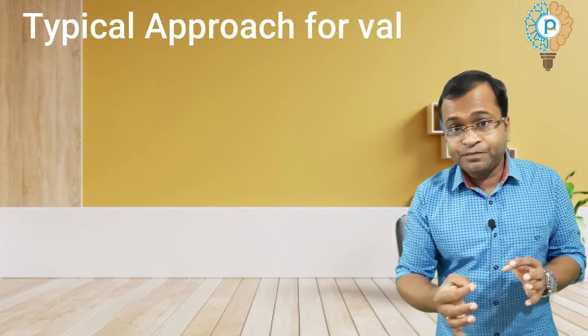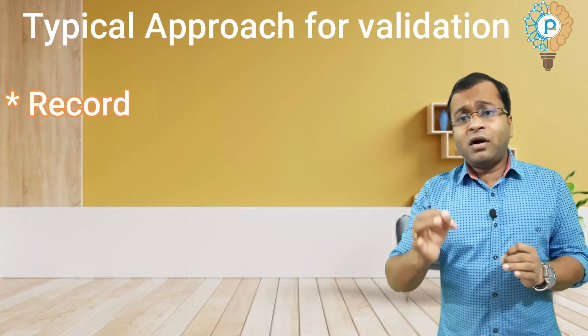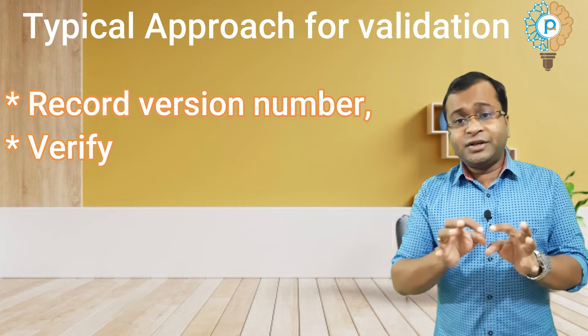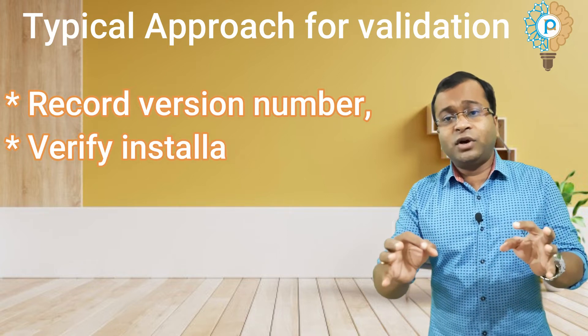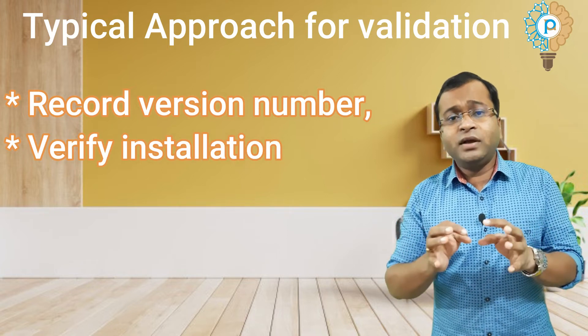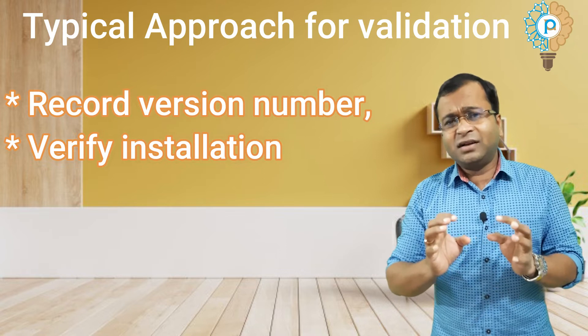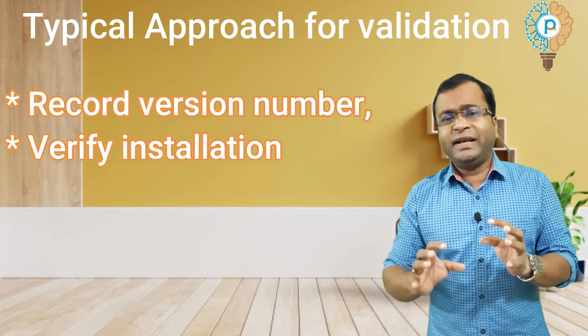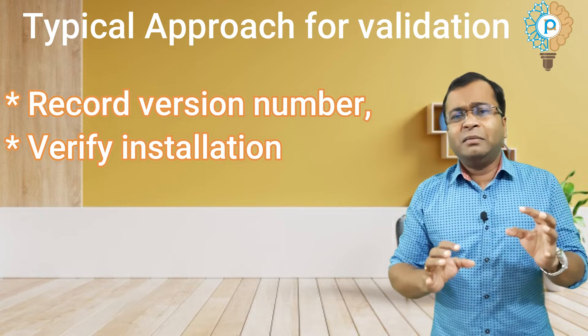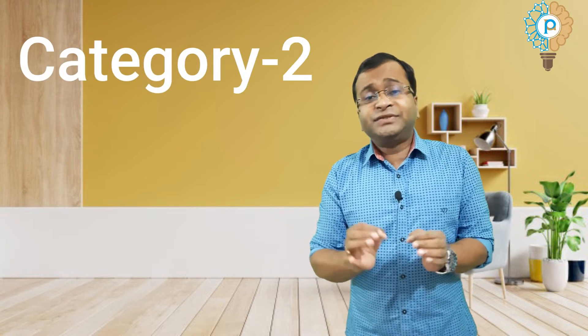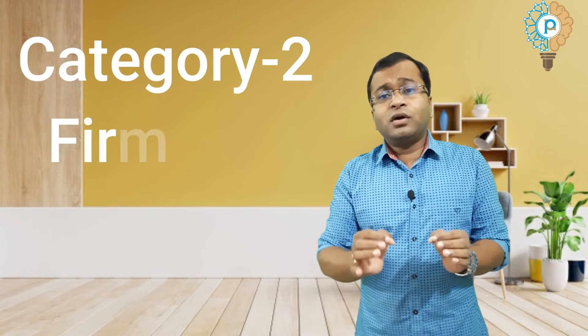The typical validation approach for Category 1 software includes: record the version number and verify the correctness of the installation by following an approved installation procedure. These are the key things required for the validation of Category 1 software.